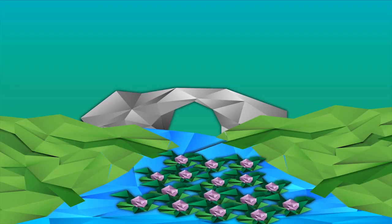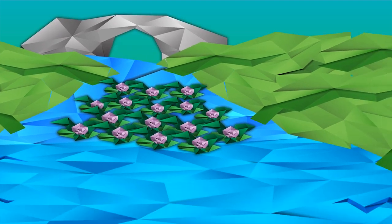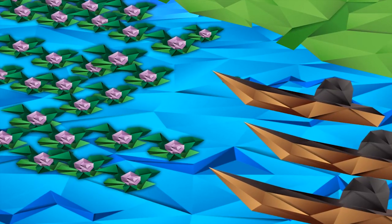The water hyacinth has clogged waterways, impeding boat transport and fishing activities, and reducing fisheries productivity.